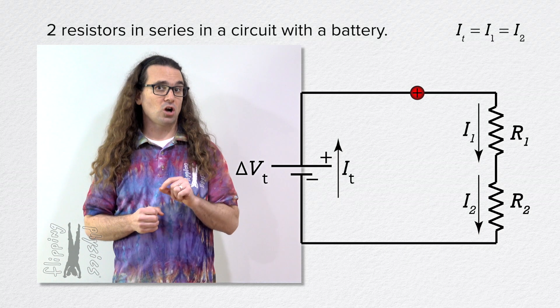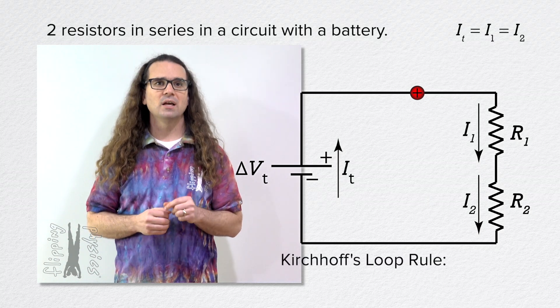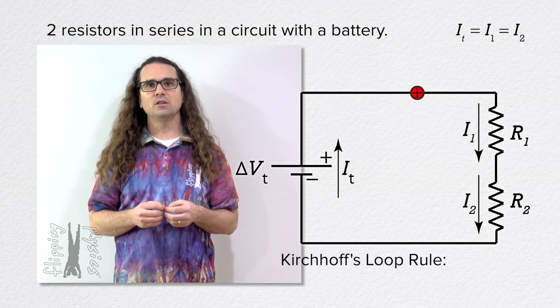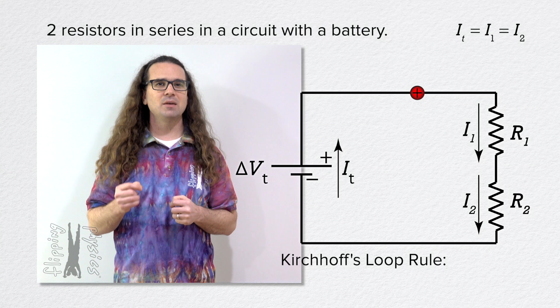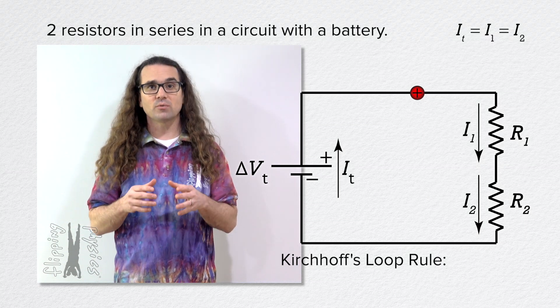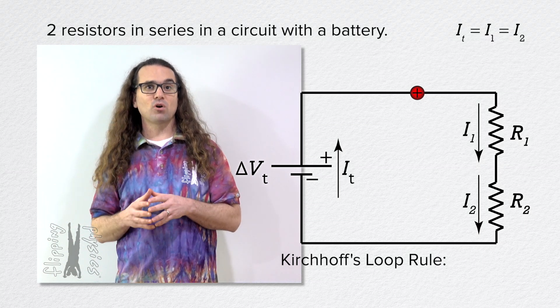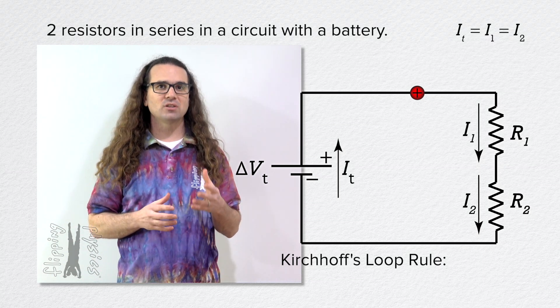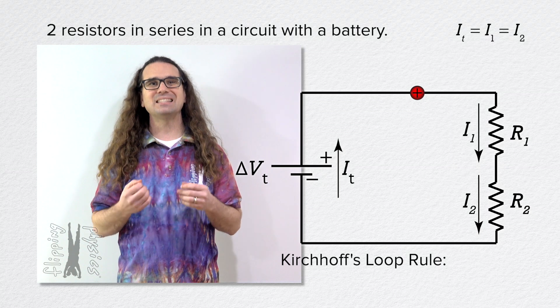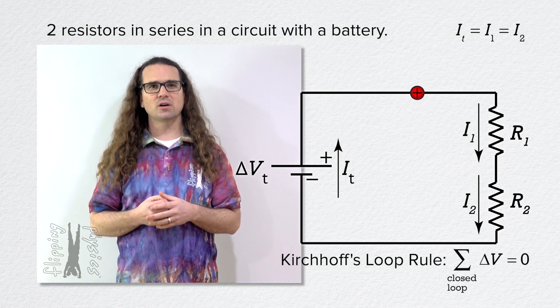According to Kirchhoff's loop rule, a charge moving all the way around a loop in a circuit must end with the same electric potential energy it started with. Therefore, the electric potential difference all the way around a loop is equal to zero.